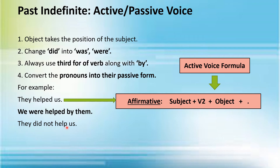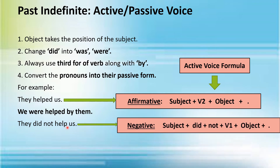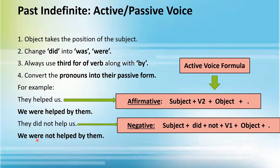Now consider: 'They did not help us.' This is the negative sentence of past indefinite tense. The passive form of 'us' will be 'we', then you add 'were not' because it's a negative sentence, followed by the third form of the verb 'helped', and then 'by them'. So the passive voice is: 'We were not helped by them.'